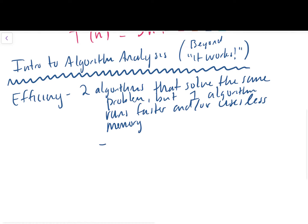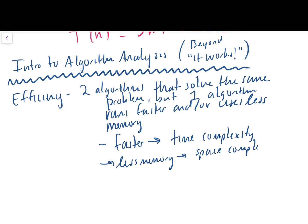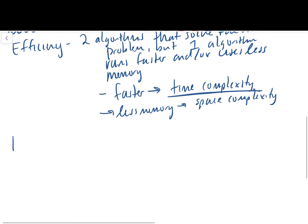In efficiency, we're talking about the runtime or the memory usage. When we're talking about something being elegant, we're talking about it adhering to a coding standard or being super readable or self-documenting. So let's suppose that we have two algorithms and these two algorithms solve the exact same problem, but let's say one algorithm runs faster and/or uses less memory.